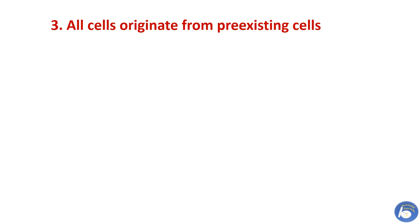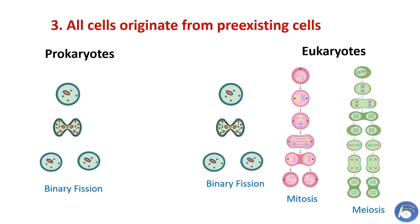The third dictum is: all cells originate from pre-existing cells. Cells have the ability to divide and give rise to identical cells. In prokaryotes, through the process of binary fission, a cell forms a new cell. In eukaryotes, through the process of mitosis or meiosis, a cell divides and gives rise to another cell.